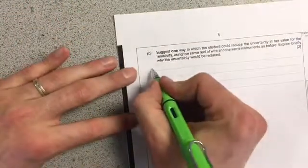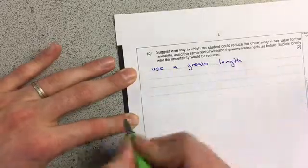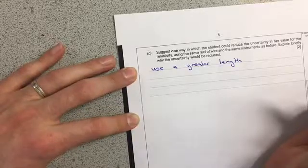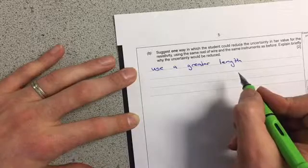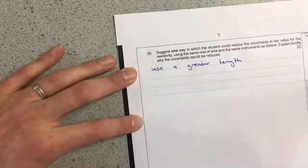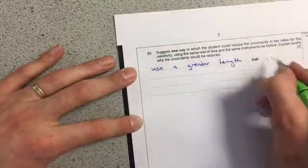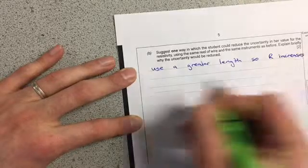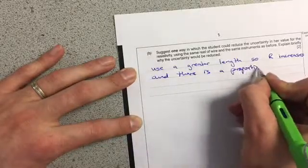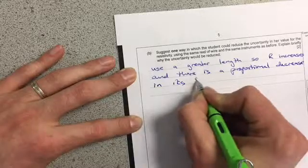I could use a greater length. If I use a greater length, the percentage uncertainty in the length measurement will go down, but it's so small it won't have much effect. However, a greater length will give a higher resistance value. Since resistance was at 4%, if the resistance value goes up, the percentage uncertainty goes down. So: use a greater length so R increases, and there is a proportional decrease in its percentage uncertainty.